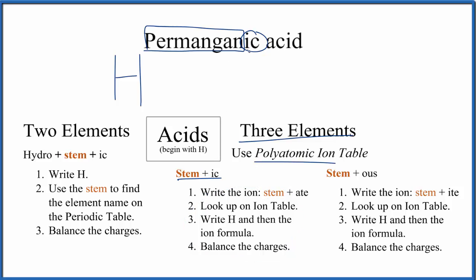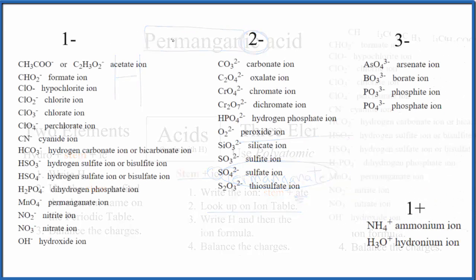So A-T-E. That's the ion we're going to look up. Let's do that. So we're looking down our list here, and right here, that's the permanganate ion, MnO4 minus. So we know the ion's formula now.